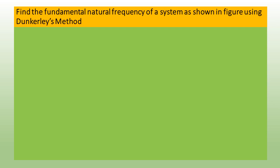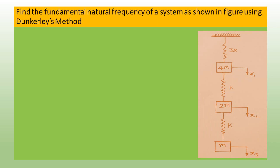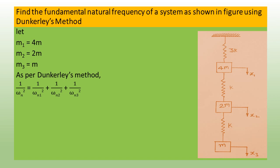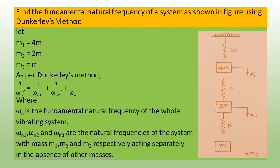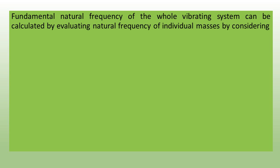Let us consider a problem: find the fundamental natural frequency of a system as shown in the figure using Dunkerley's method. Here three masses and three springs are attached as shown. Let m1 = 4m, m2 = 2m, m3 = m. As per Dunkerley's method: 1/ωn² = 1/ωn1² + 1/ωn2² + 1/ωn3², where ωn is the fundamental natural frequency of the whole system, and ωn1, ωn2, ωn3 are the natural frequencies with masses m1, m2, and m3 respectively acting separately.